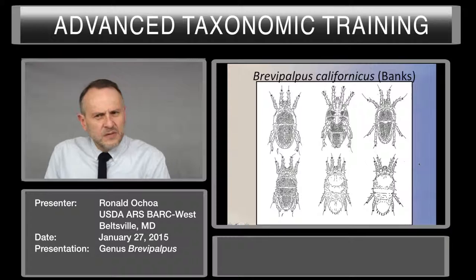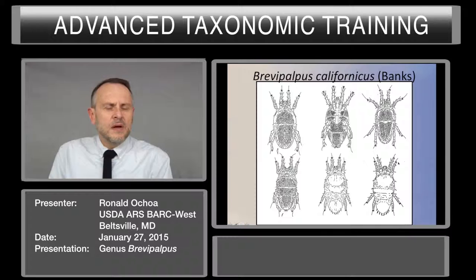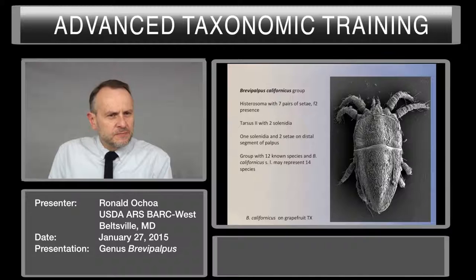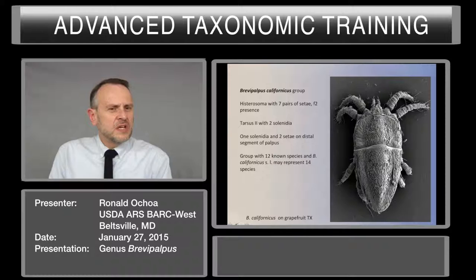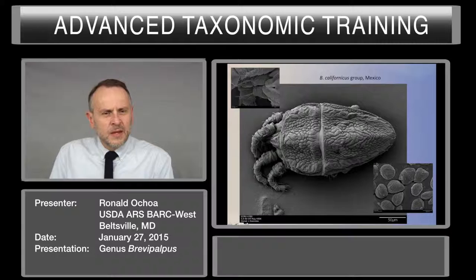Brevipalpus californicus is another group. This is a big complex with many different variations in tones and a very particular shape of the body, as it's more elongated than the phoenicis group. The hysterosoma has seven pairs of setae including F2, which is present. Tarsus 2 with two solenidia, one solenidia and two setae on the distal segment of the palp. The group has 12 known species, and Brevipalpus californicus sensu lato may represent 14 different species.